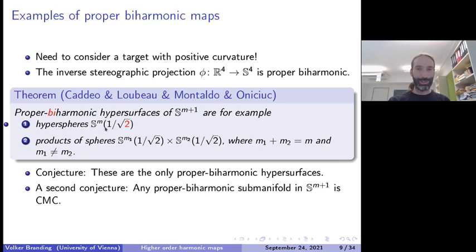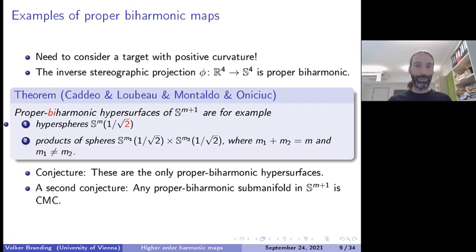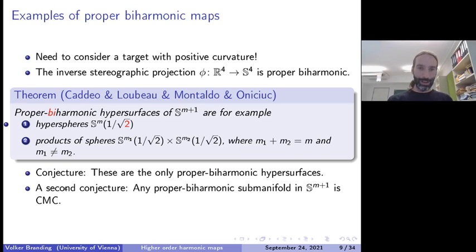They showed that proper biharmonic hypersurfaces of the Euclidean sphere S^{n+1} are, for example, hyperspheres of radius 1/sqrt(2), and also products of spheres both with radii 1/sqrt(2) whose dimensions add up to m but are not equal. The conjecture is that these are really the only proper biharmonic hypersurfaces in the sphere; this has been checked in many special cases with many partial results, but the final breakthrough is still open. A second conjecture says any proper biharmonic submanifold in the Euclidean sphere is CMC, which is also still open.